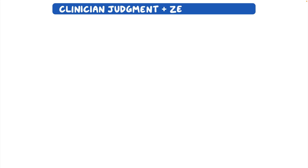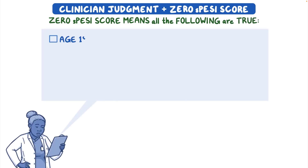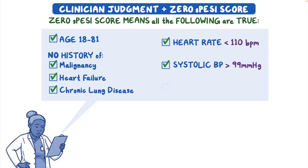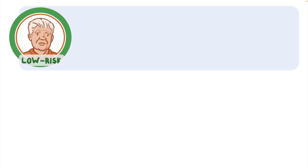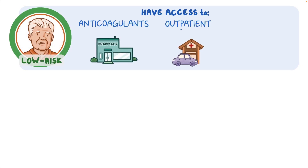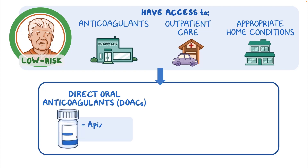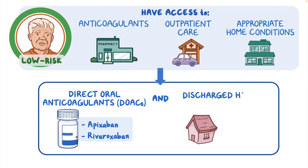Alternatively, the clinician's judgment that the patient's condition can be managed safely at home, plus a 0 S-PESI score, can be used to classify the patient as low-risk. A 0 S-PESI score means all of the following are true: the patient's age is between 18 and 81 years, there is no history of malignancy, heart failure, or chronic lung disease, heart rate is lower than 110 beats per minute, systolic blood pressure is above 99 mmHg, and oxygen saturation is above 89%. Patients classified as low-risk who have access to anticoagulants and outpatient care, as well as appropriate home conditions, can be managed with direct oral anticoagulants (DOACs) such as apixaban or rivaroxaban, and discharged to home with outpatient follow-up.